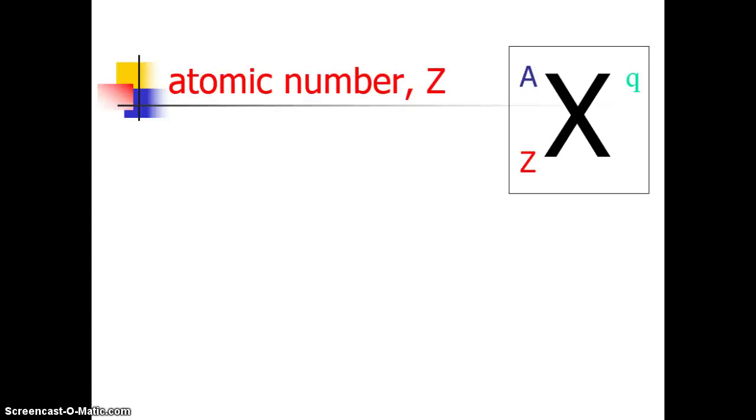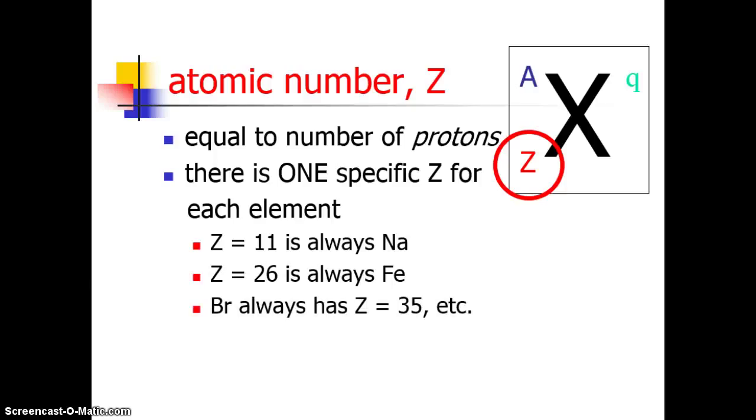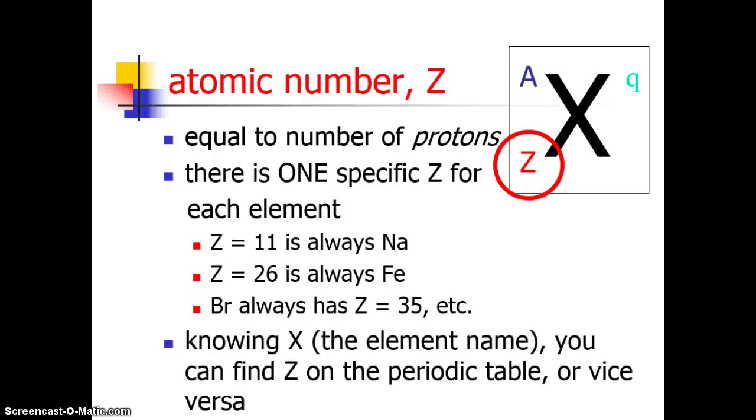Thanks for writing that down. So let's take a look at the Z, the atomic number. I just said that was equal to the number of protons. So for carbon, that number happens to be 6. And there's only one Z number for every element. If you know the element name, you can find the Z, you can find the protons or vice versa.